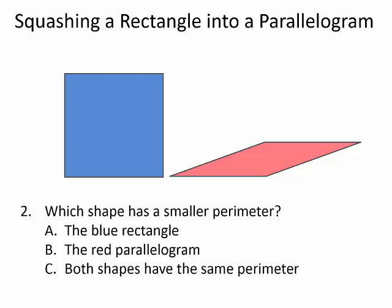The second question. Which shape do you think has a smaller perimeter? The answer is, both shapes have the same perimeter.